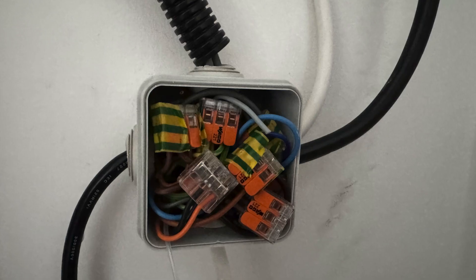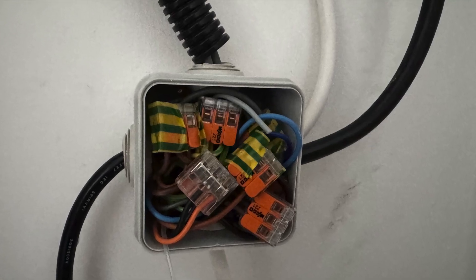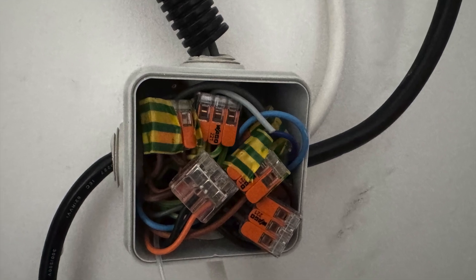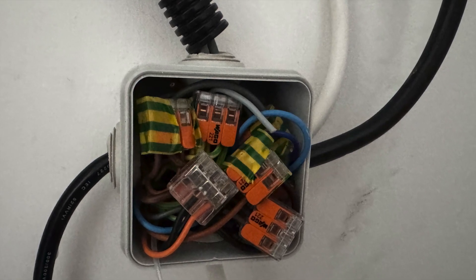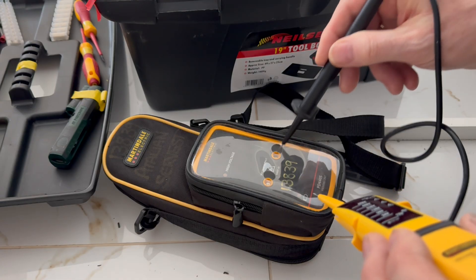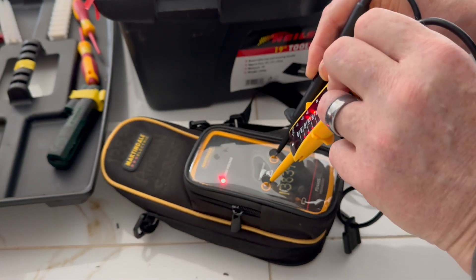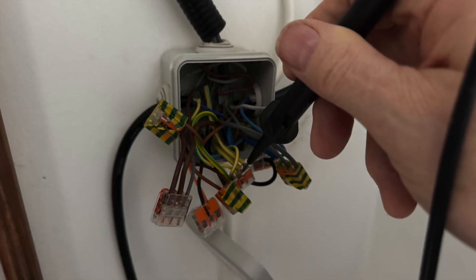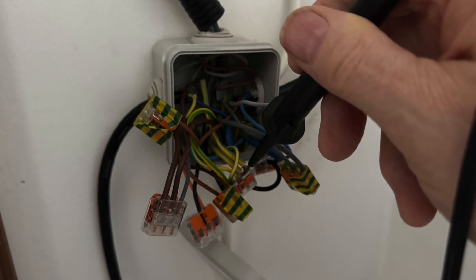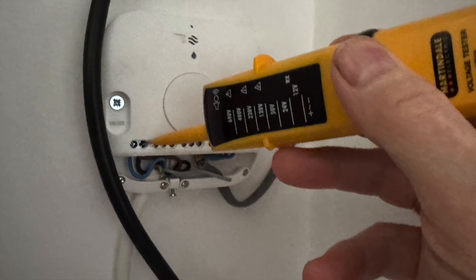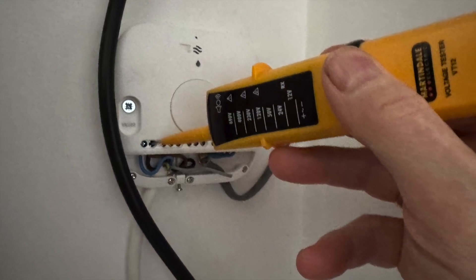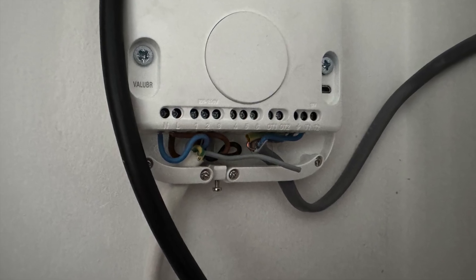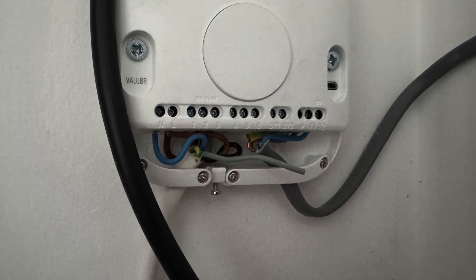Now I need to carry out my safe isolation procedure. I need to carefully remove this tangle of wires out of this incredibly small box. First thing I'm going to prove my two pole tester's working with my proven unit. I'm testing from the earth wire to all the live wires that go to the stat. Now I know that the power has been correctly isolated.